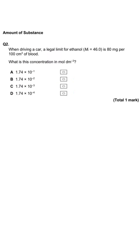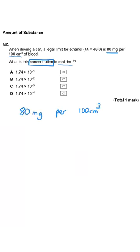Here we're being asked about ethanol. We're told that the legal limit for ethanol is 80 milligrams per 100 centimetres cubed of blood, and we're being asked what this concentration is in moles per decimetre cubed. So we need to start off with a series of conversions.